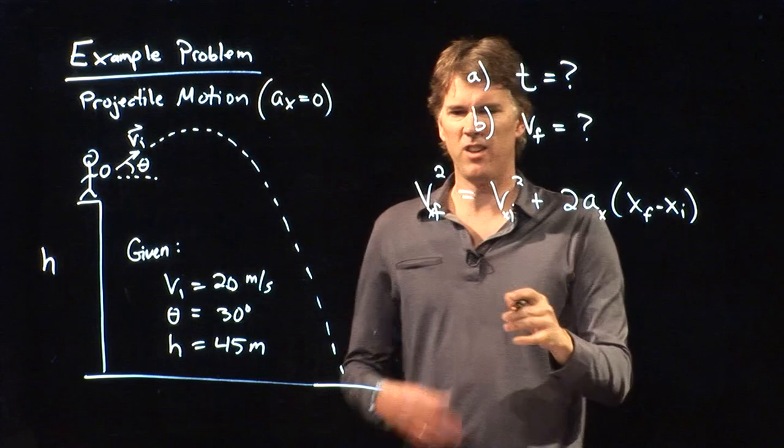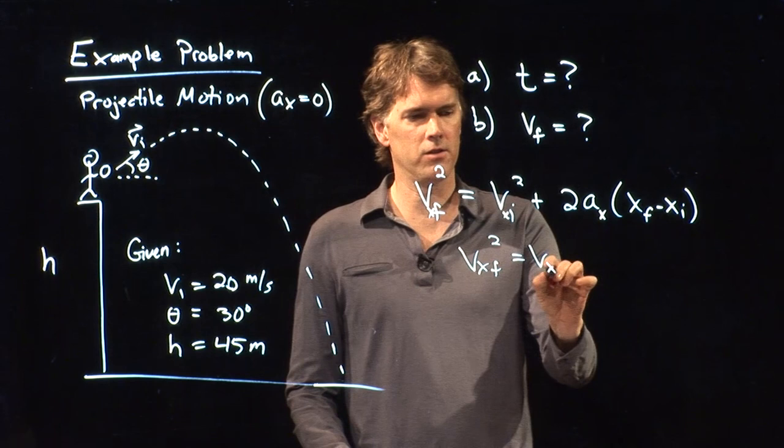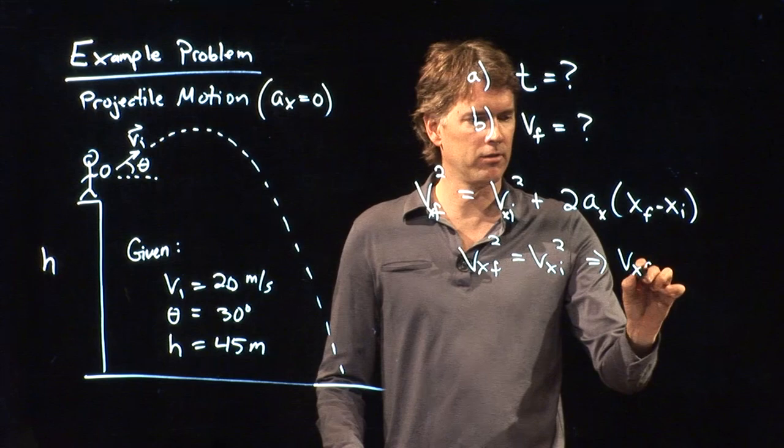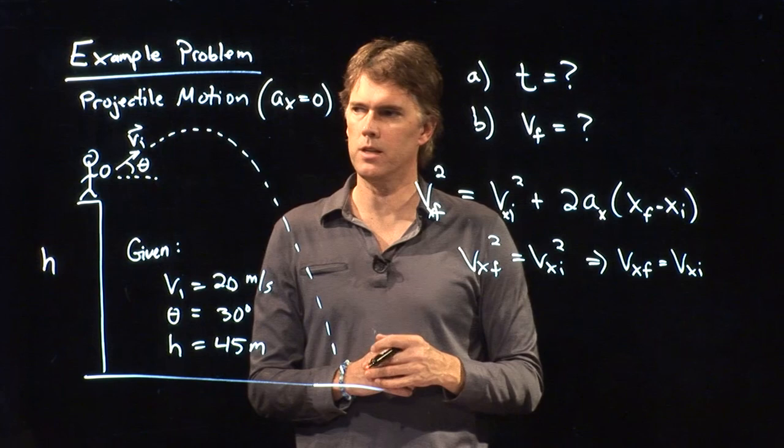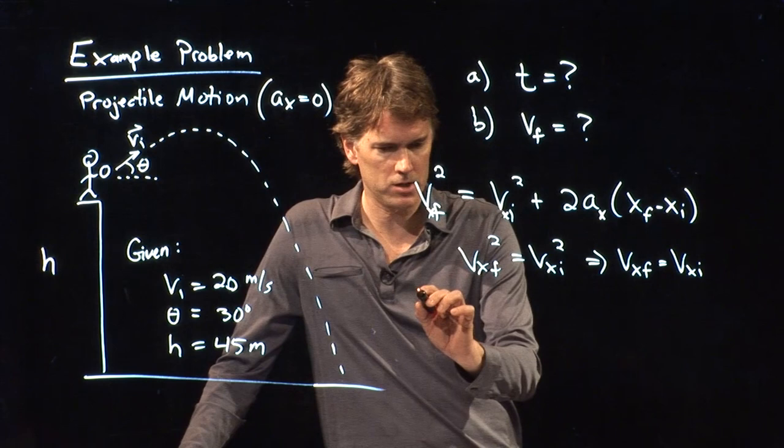And so all this equation tells us is that vxf squared is equal to vxi squared, or vx final is equal to vx initial. It doesn't change its speed in the x direction. The x component of the velocity doesn't change.